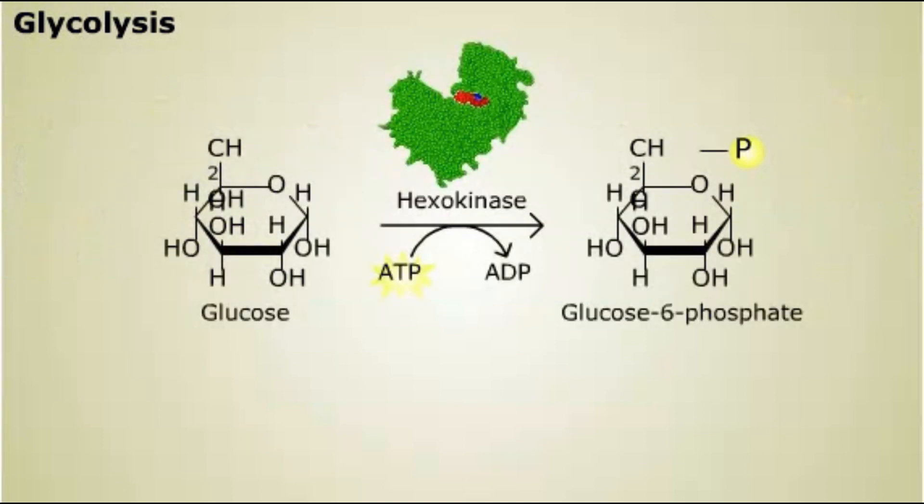The enzyme hexokinase adds a phosphate to glucose. It doesn't add the phosphate just anywhere. It specifically adds it to the C6-hydroxyl. Other enzymes exist that phosphorylate the other hydroxyl groups. Hexokinase adds the phosphate to the C6-hydroxyl because of the way the enzyme specifically binds the glucose molecule.